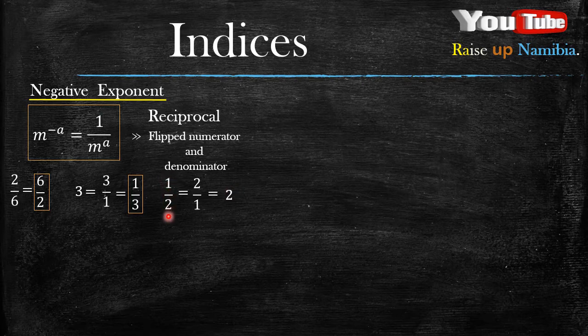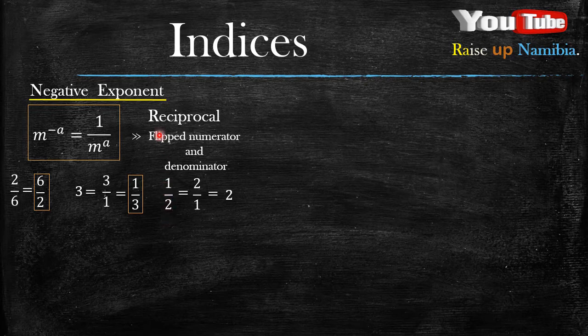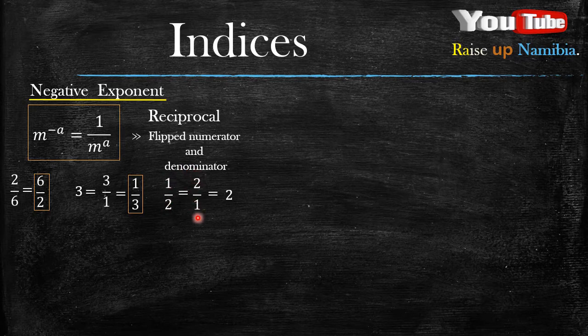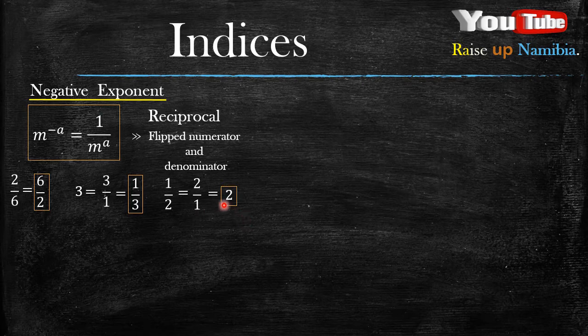So when you reciprocate or you look for the reciprocal for 1 over 2, you get 2 over 1. And 2 over 1 is the same as saying just 2.